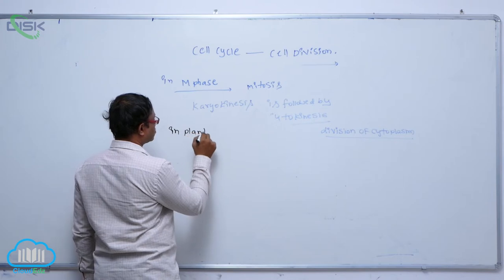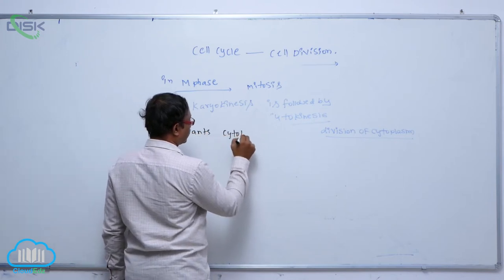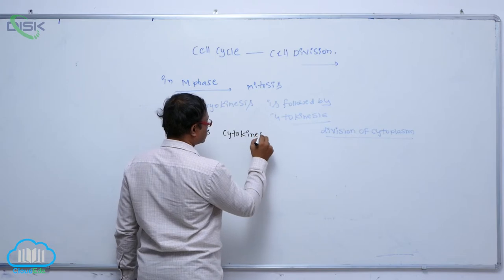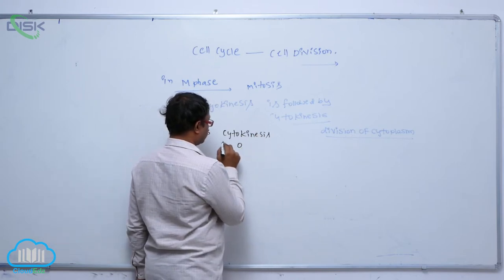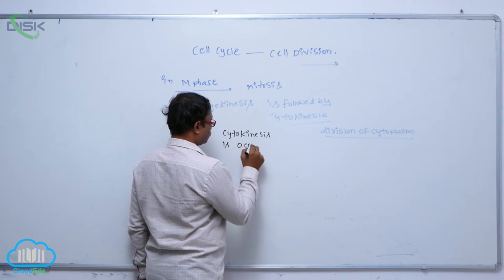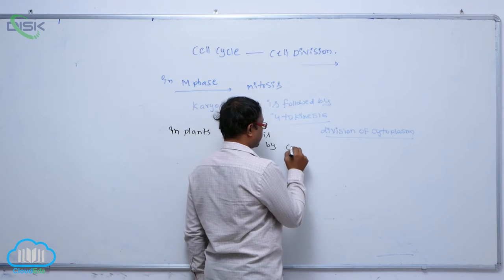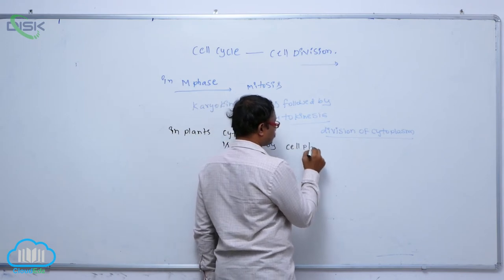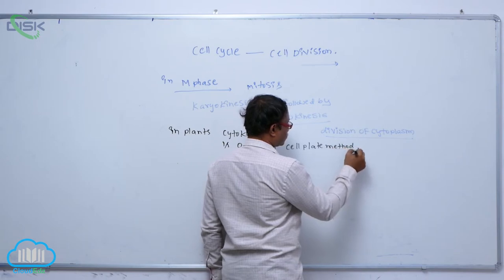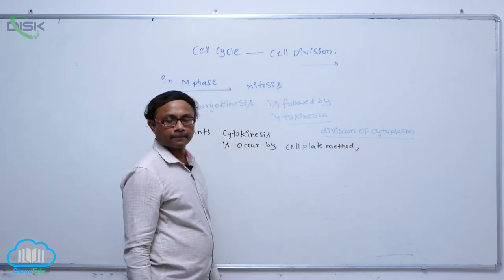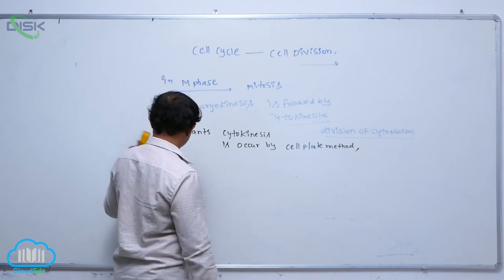In plants, cytokinesis occurs by the cell plate method. The cell plate method is important to understand.